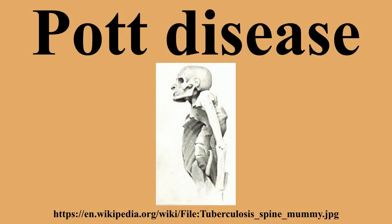Pott's disease results from hematogenous spread of tuberculosis from other sites, often the lungs. The infection then spreads from two adjacent vertebrae into the adjoining intervertebral disc space. If only one vertebra is affected, the disc is normal.